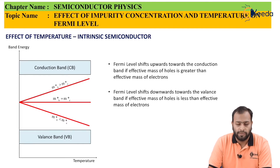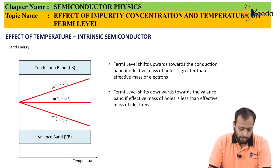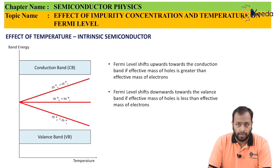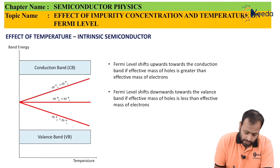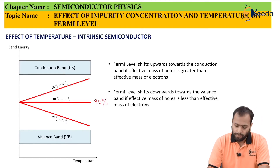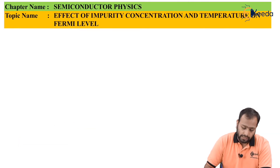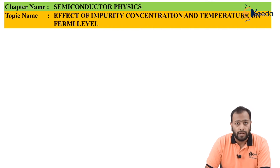In the majority of cases, we always assume the effective mass of the hole to be equal to the effective mass of the electron. Thus, in general terms, we say that the Fermi level of an intrinsic semiconductor does not get affected by temperature — 95% of the time we are talking about this level. Now let's extend our study to extrinsic semiconductors. As you know, extrinsic semiconductors are of two types: n-type and p-type.